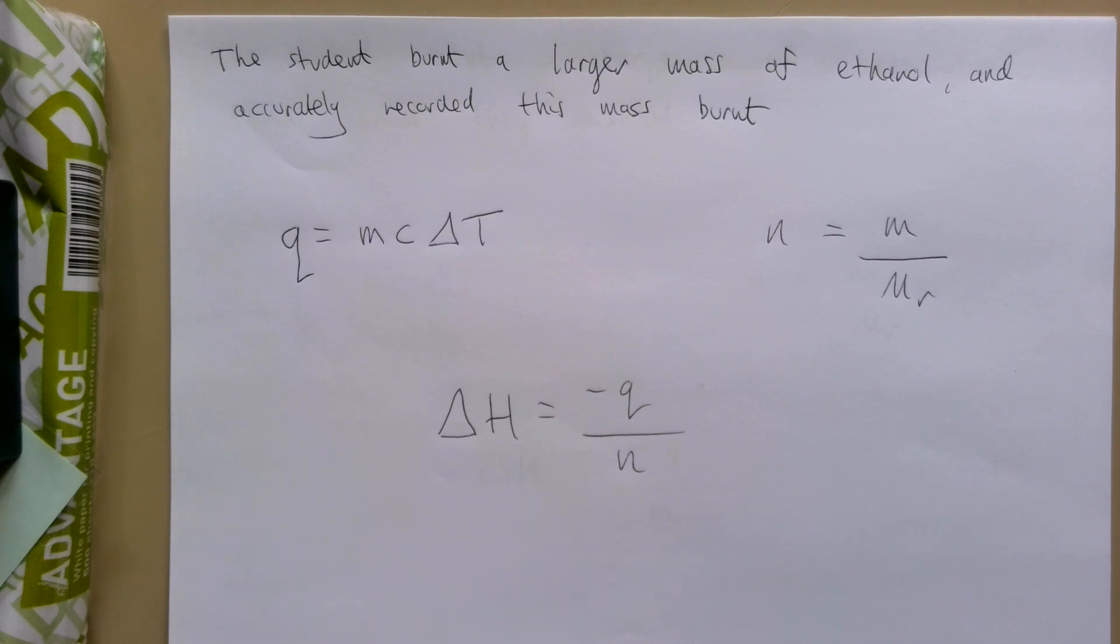The way to do this is to write out your equations and we're going to use little arrows to follow what effect our change would have had.